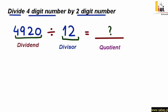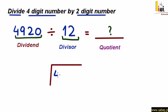So here we have division — dividend, divisor and quotient. Now we start with the process of division. We use this kind of sign. The dividend is 4,920 and the divisor goes outside.